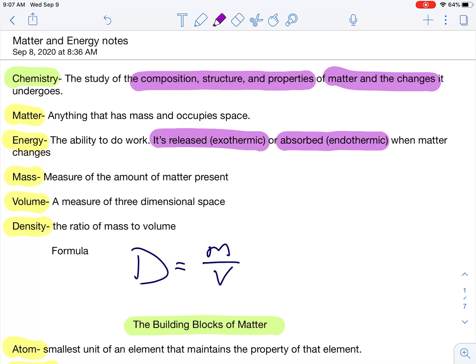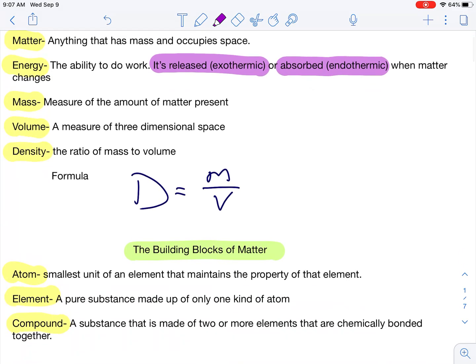Mass, the measure of amount of matter present. Volume, a measure of three-dimensional space. And then density, a ratio of mass to volume. This formula is in your packet. It's on the very back page. You will have that packet for all of your tests and all of your quizzes. It is a reference packet for your use.